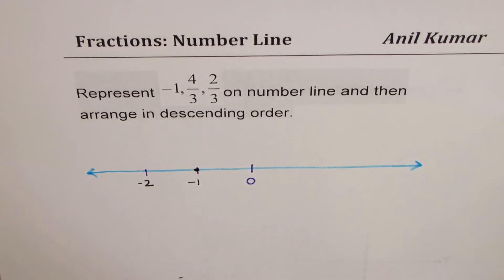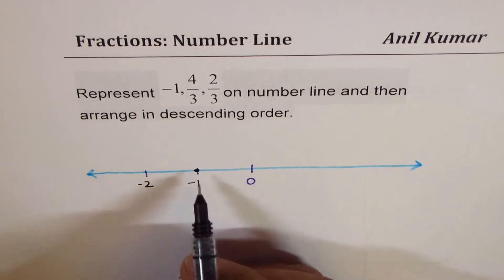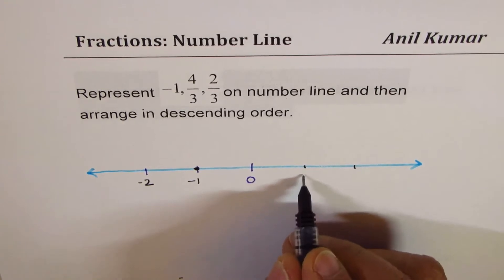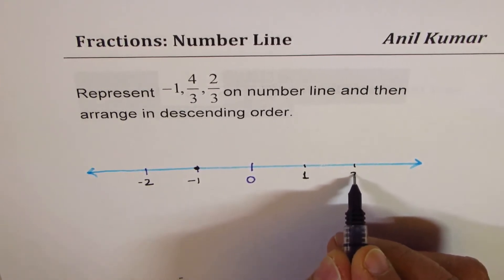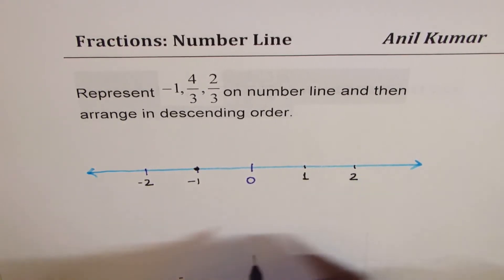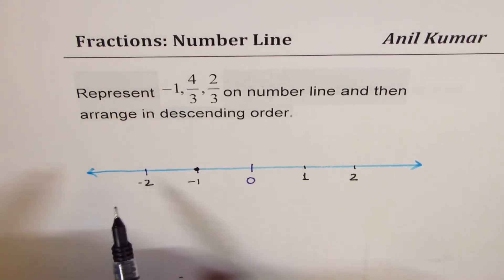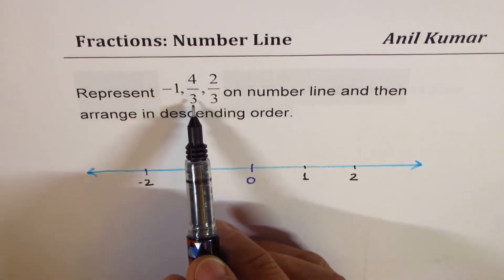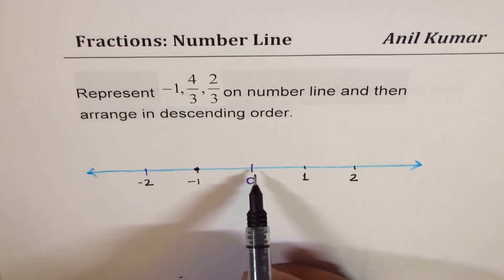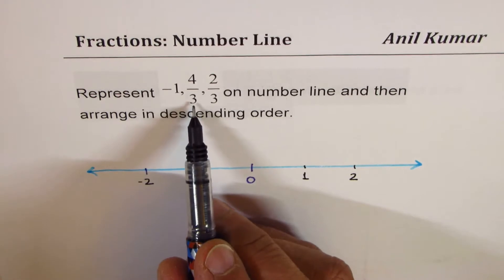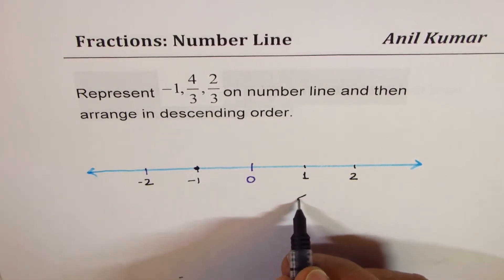All numbers are the same distance away, so each one unit is that long. Let me also mark 1 and 2 on the right side of 0 — these are positive numbers. Now, 4/3 means that this one unit has to be divided into 3 parts.